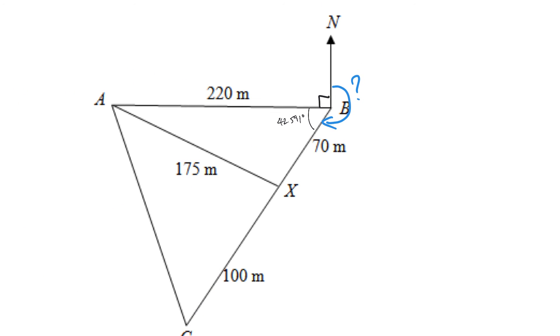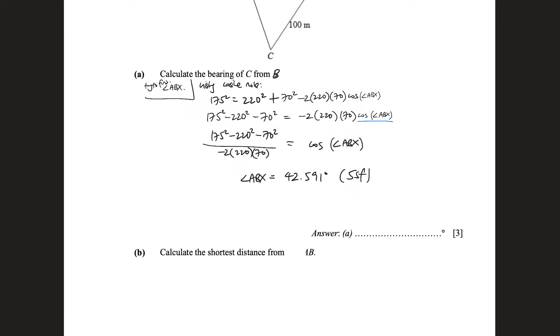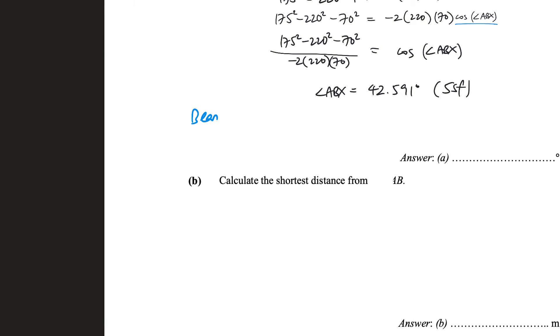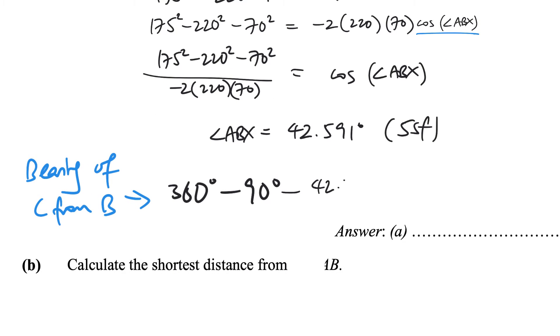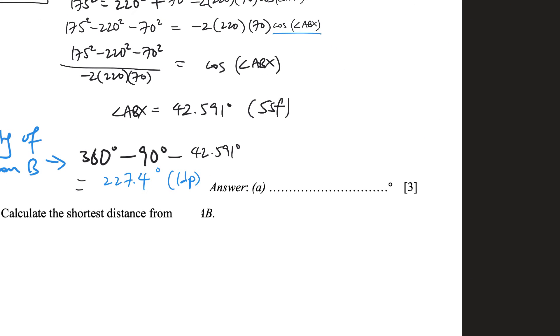Okay, I think we can find our bearing already. So we can say the bearing of C from B is simply 360 degrees subtract away 90 degrees, we subtract away this 90, and then subtract away 42.591, and what we get is 227.4 degrees, 1 decimal place. Cool.